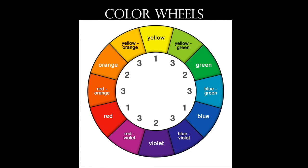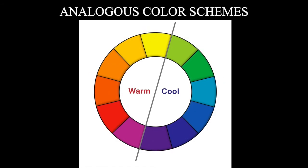Artists utilize what are called color schemes, and we'll cover three of them: analogous, complementary, and triadic. An analogous color scheme uses colors that are near each other on the color wheel. We generally break the color wheel in half — warm colors on one side, cool colors on the other.